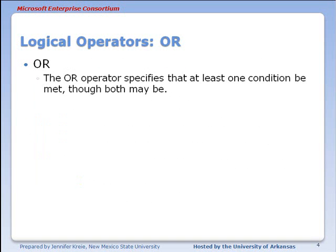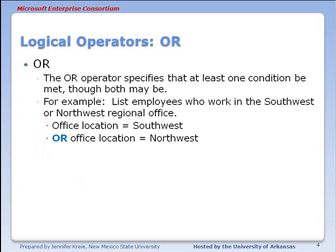If you have an OR operator, at least one condition must be met, or both conditions, before the data is displayed. For example, you might ask for a list from the database that shows employees who work in the Southwest or the Northwest regional office. So you want to see an employee if the location of their office equals Southwest or if the location of the office equals Northwest.